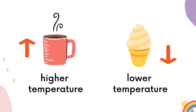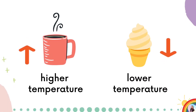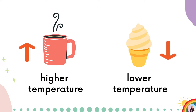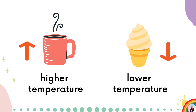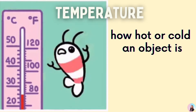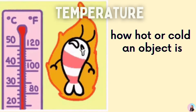When you hold a cup of coffee and an ice cream, you can sense how hot or cold they are. This sensation is associated with temperature. We say that an object has a higher temperature if it is hot. On the other hand, a cold object has a lower temperature.